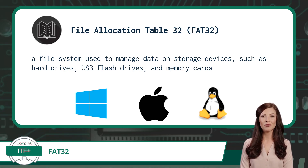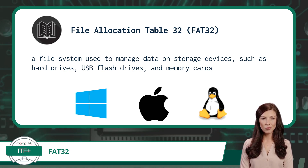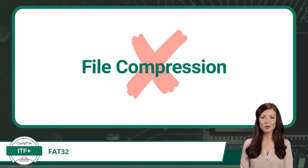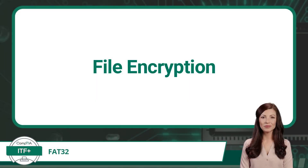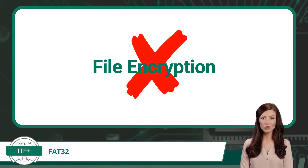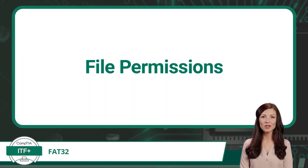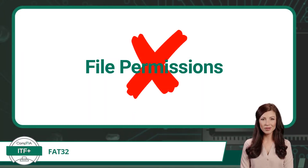Now that we have a definition for FAT32, let's quickly see which file system features it supports. Spoiler alert — not many. FAT32 does not support file compression, as it lacks the built-in features to compress individual files or folders. FAT32 also does not support file encryption, and it does not support file permissions, as it lacks the ability to assign different access rights to individual files or folders for different users or groups.